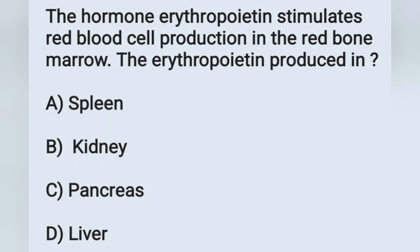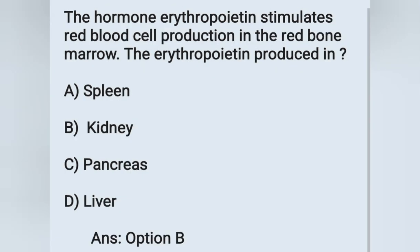Next question: the hormone erythropoietin stimulates red blood cell production in the red bone marrow. Erythropoietin is produced in which organ? Options: (a) spleen, (b) kidney, (c) pancreas, (d) liver. Erythropoietin is synthesized in the kidney. Option B is the correct answer.